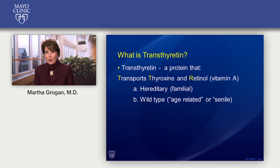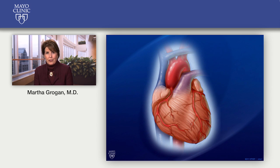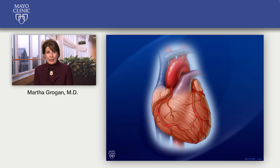Today we're really going to talk about wild-type transthyretin amyloidosis and specifically how it affects the heart. But to do that we need to review how your heart functions. Your heart is about the size of your fist, it's on the left side of your chest, and here we see the heart from the outside with blood vessels along the surface.